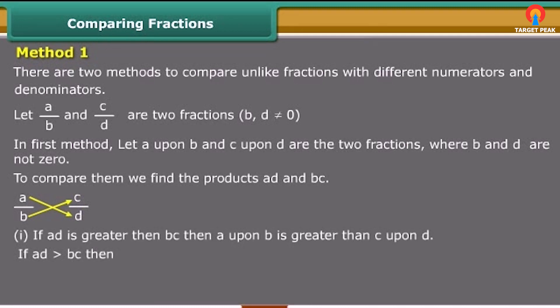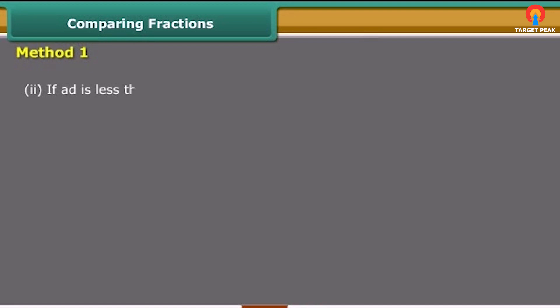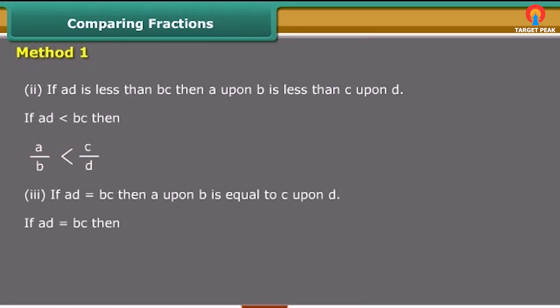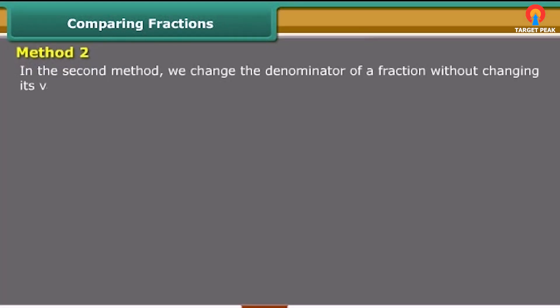If A×D is greater than B×C, then A upon B is greater than C upon D. If A×D is less than B×C, then A upon B is less than C upon D. If A×D is equal to B×C, then A upon B is equal to C upon D.